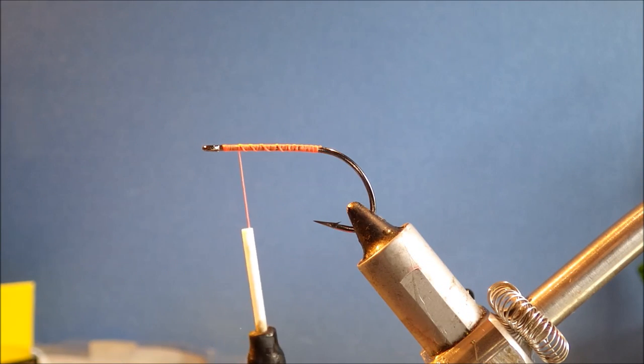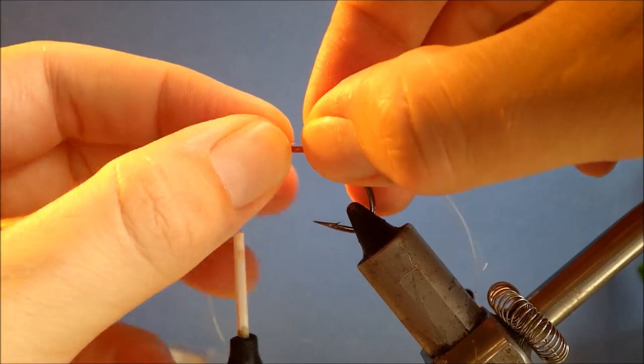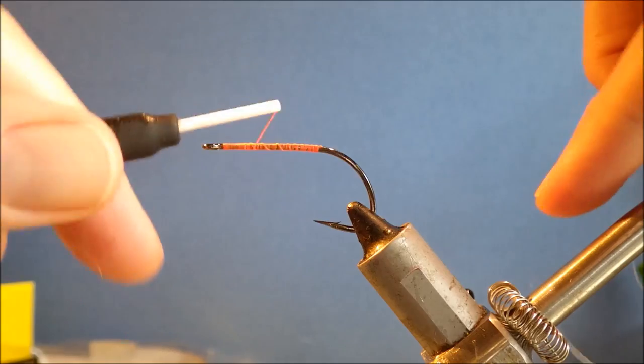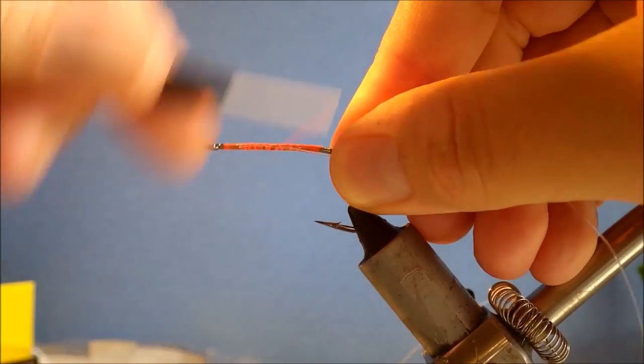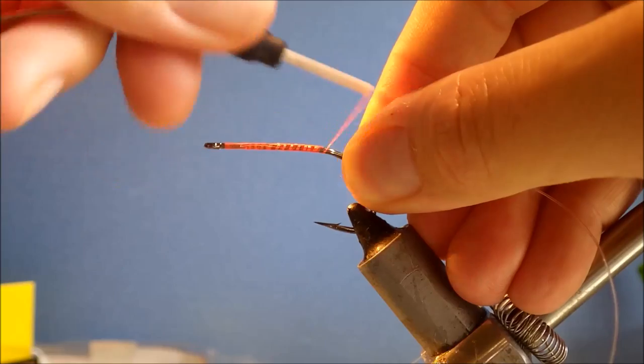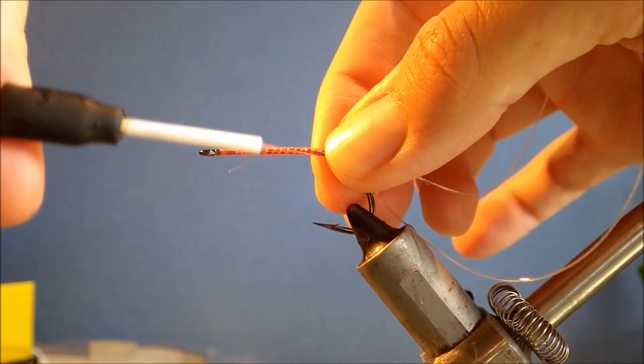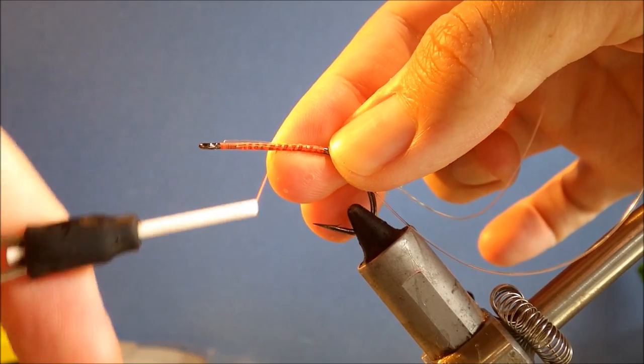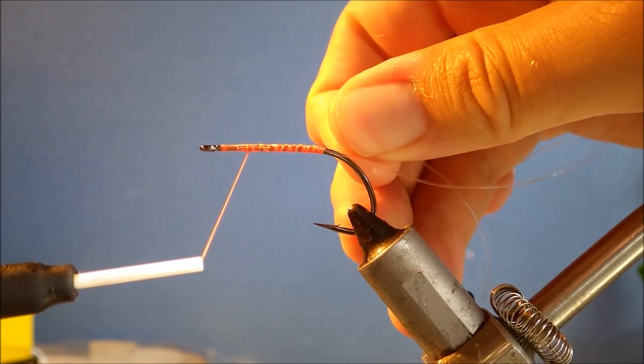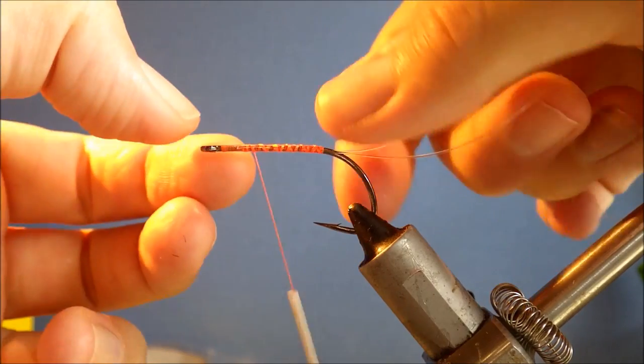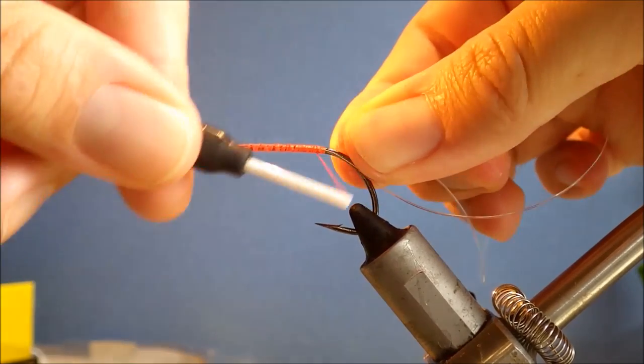First thing is I'm going to tie in my weed guard. I'm using a double weed guard on this, not a double loop, so I'm using quite light nylon, only 15 pound. I just like to tie it in along the side of the shank on one side, make my big loop, and do the same on the other. Just try and keep it on the side of the shank.